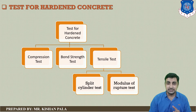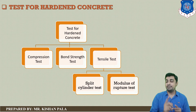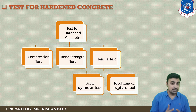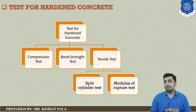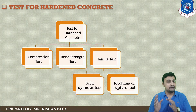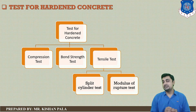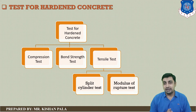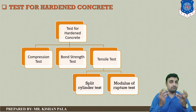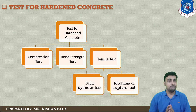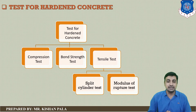First one is a compression test for finding the compressive strength of the concrete mass. Second one is a bond strength test for finding the bonding between the steel and the concrete mass. The third one is a tensile test for finding the tensile strength. There are mainly two types of tests to find out the tensile strength: first one is a split cylinder test and the second one is a modulus of rupture test.